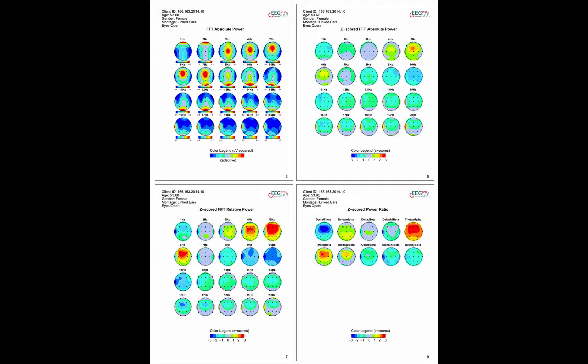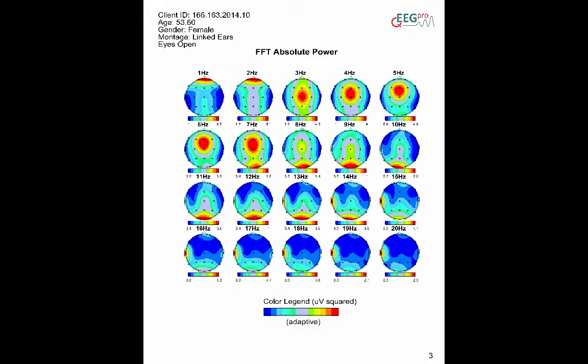For absolute power analysis, both the absolute power in µV² and the z-scored absolute power are available. Be aware that the absolute power analysis has adaptive scaling, meaning that for each discrete frequency bin the plot is scaled between the minimum and maximum voltage within that frequency bin.